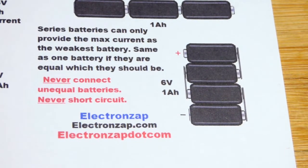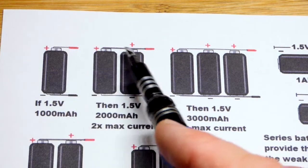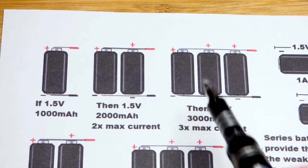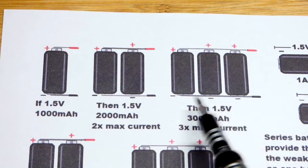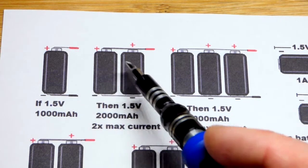Now that brings us to parallel batteries. Parallel batteries have both their positive terminals, in this case all three of their positive terminals, all the positive terminals are connected and all the negative terminals are connected.